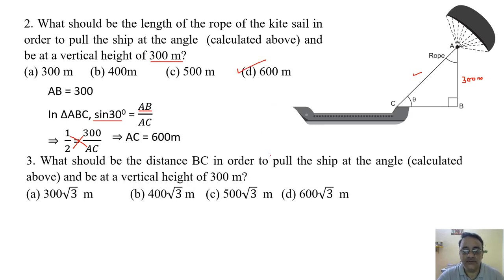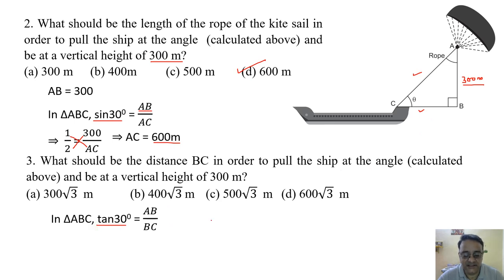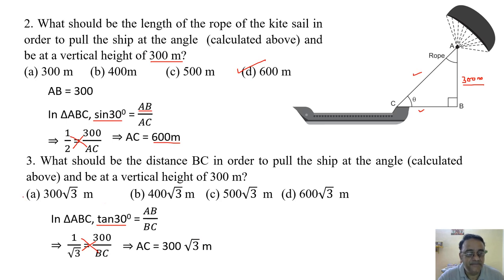Question 3: What should be the distance BC to pull the ship at 30° and be at a vertical height of 300 meter? We use tan 30° = AB/BC: 1/√3 = 300/BC. Cross multiplying gives BC = 300√3. The correct option is option C.